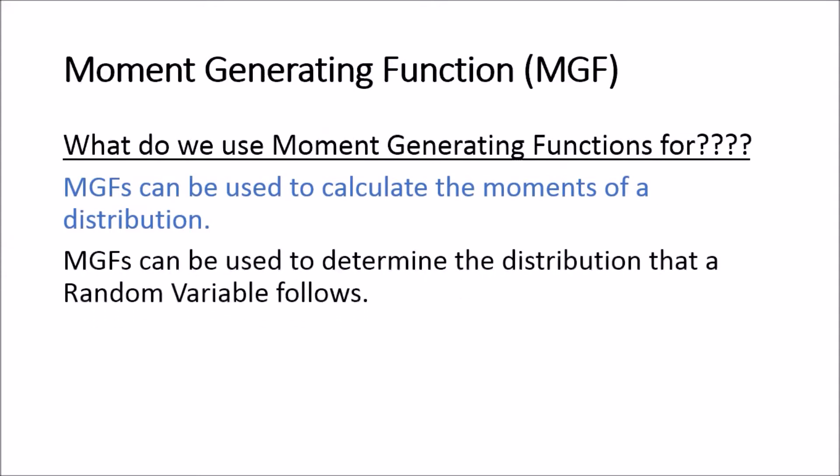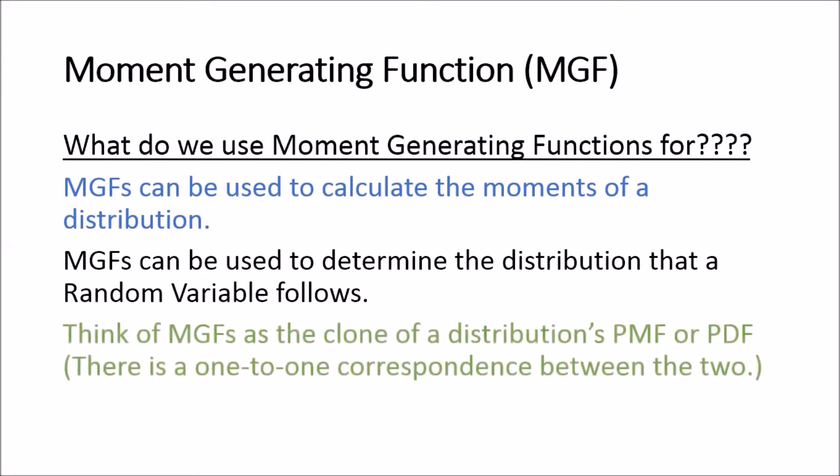Moment generating functions can also be used to determine the distribution that a random variable follows. If you know a specific random variable has a certain moment generating function and you see that your random variable has that same moment generating function, then you know your random variable follows that particular distribution. Think of moment generating functions as the clone of a distribution's PMF or PDF — there's a one-to-one correspondence between the two.